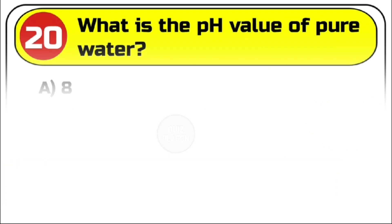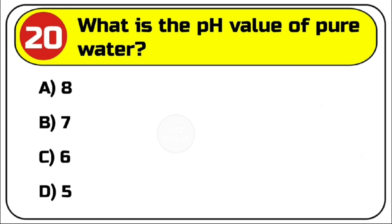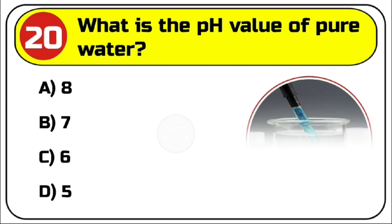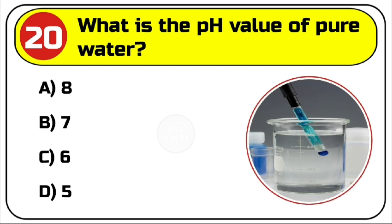Question number 20. What is the pH value of pure water? Options are A. 8. B. 7. C. 6. D. 5.